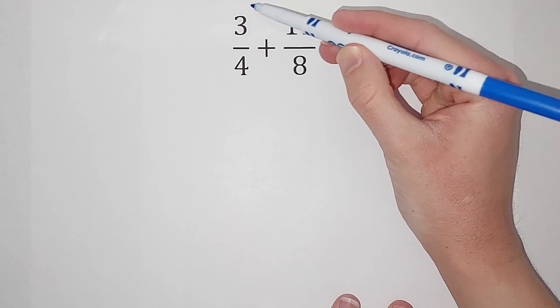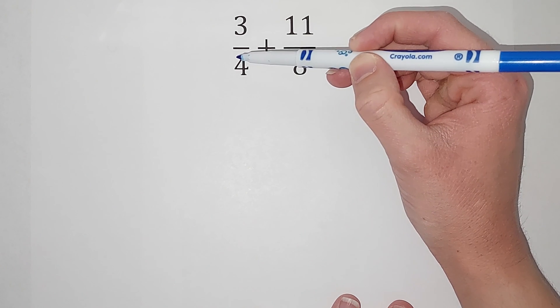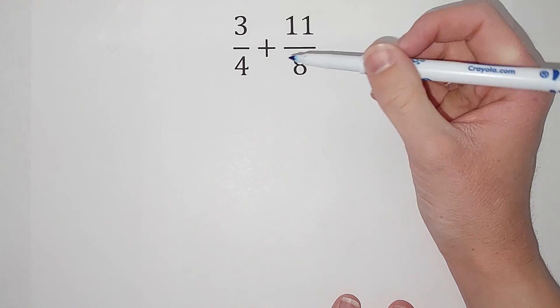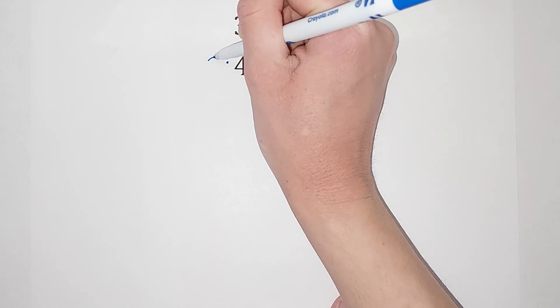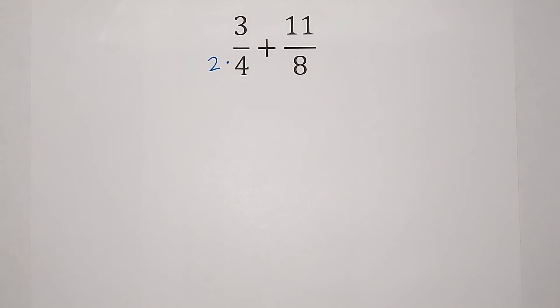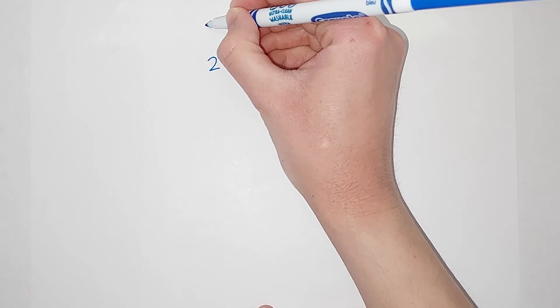This one, we want to have a denominator of eight. So what do I multiply four by to get it to be eight? Well, I multiply it by two. So I'm going to multiply the bottom by two, but I can't just go multiplying by two wherever I want. I need to make sure that it stays balanced. So what I can do is multiply the top by two as well.